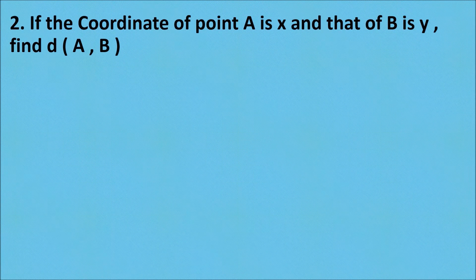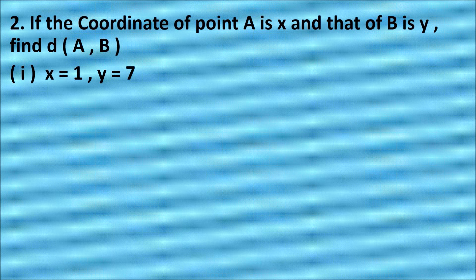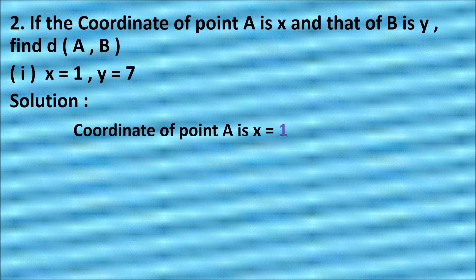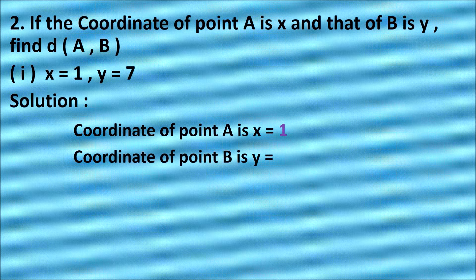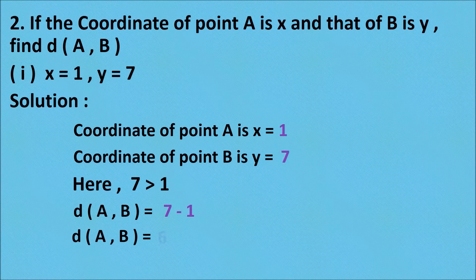Now, question number 2: if the coordinate of point A is X and that of B is Y, find the distance between A and B. For the first part, X equals 1 and Y equals 7. So the coordinate of A is 1 and the coordinate of B is 7. Since 7 is greater than 1, distance AB equals 7 minus 1. Therefore, distance AB equals 6.